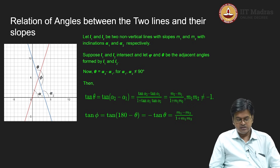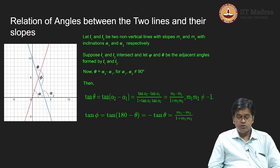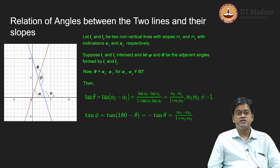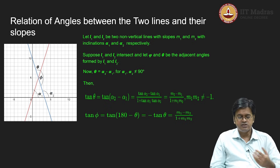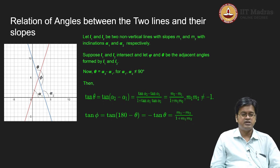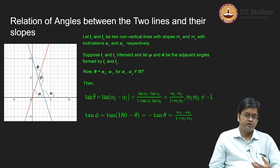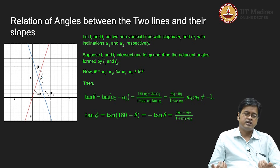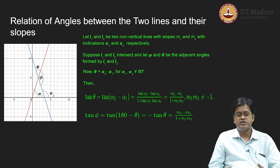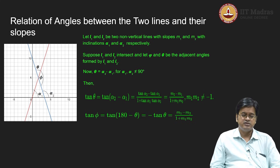Another interesting question is: what if three points are collinear? If three points A, B, C are collinear, they all lie on the same line, so the slope of AB must equal the slope of BC. If the slopes computed from these pairs are equal, then the points are collinear. This is called the condition of collinearity using slopes. That is all for today.